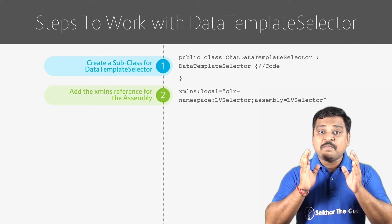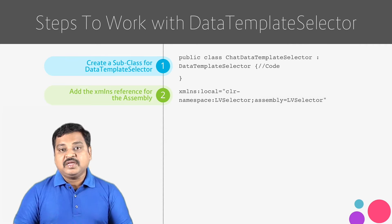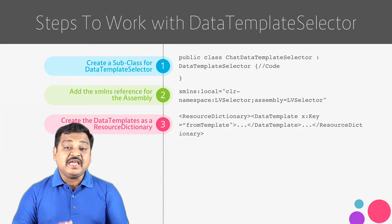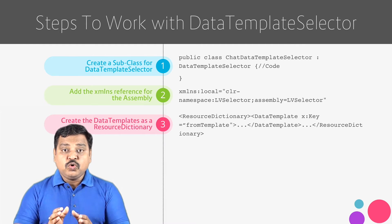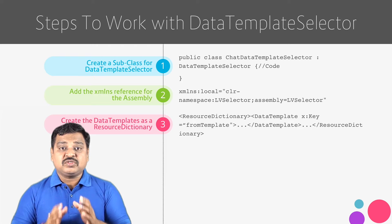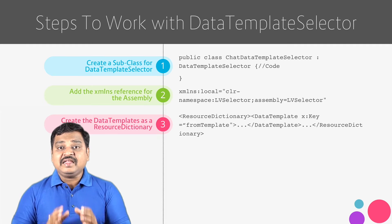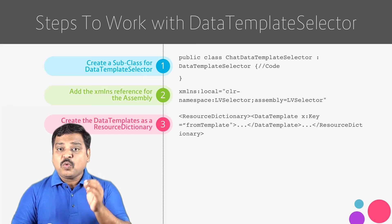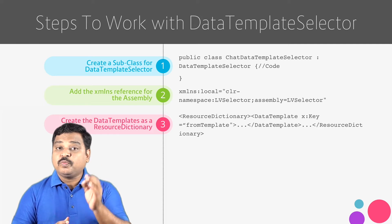For example, in this sample, LVSelector is the namespace name and the assembly name. Step 3: Create a data template as a resource dictionary as per the requirement within the content page. Within ContentPage.Resources, we need to add a resource dictionary tag, then define the data template using the DataTemplate tag. Provide a valid name using x:Key and then we can use any valid XAML code to prepare the template.